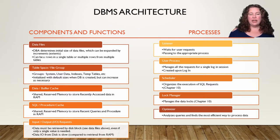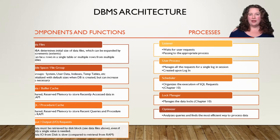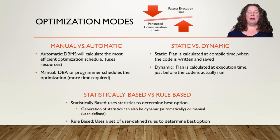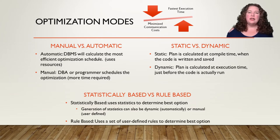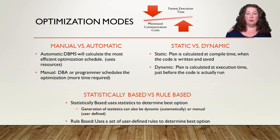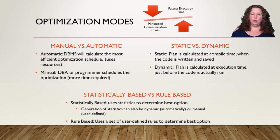When we talk about optimization, we want to minimize our communication costs and maximize — meaning make smallest — our execution time. We want the fastest execution time and the smallest amount of communication costs. Every time you get data out of a table it costs communication time, called processing and data retrieval costs, and we want those as little as possible.